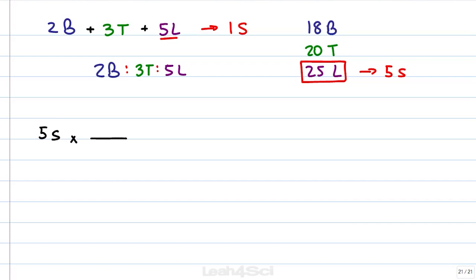Our given in this case is our product, 5 sandwiches times the ratio of 1 sandwich for 5 pieces of lettuce. Why? Because if we get a total of 5 sandwiches and every sandwich requires 5 pieces of lettuce, how much lettuce will we use? We expect to use it all up, let's see.